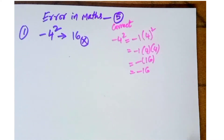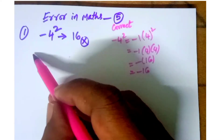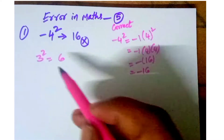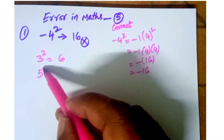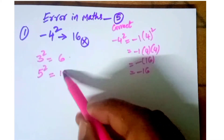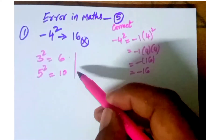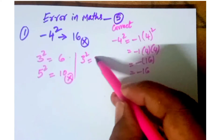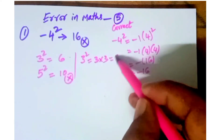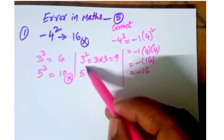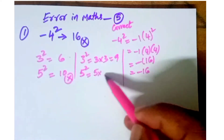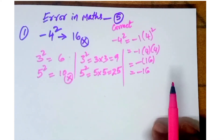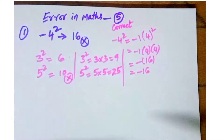Another example of this error: students write three squared as six and five squared as ten. That is wrong. Three squared is three into three, which is nine. Five squared is five into five, which is twenty-five. This is the main mistake observed in classes.